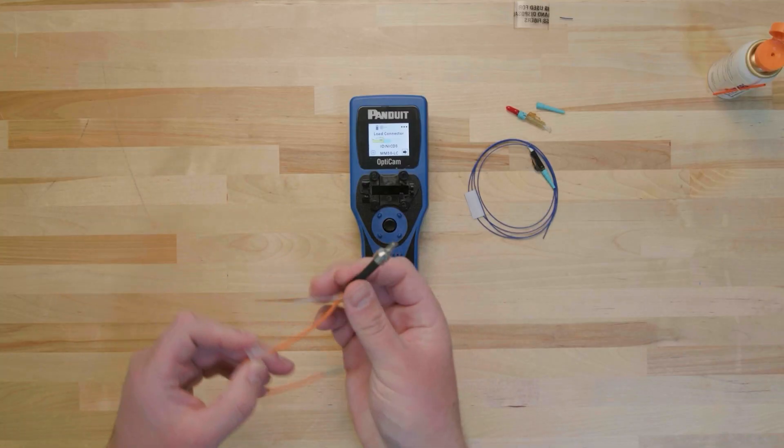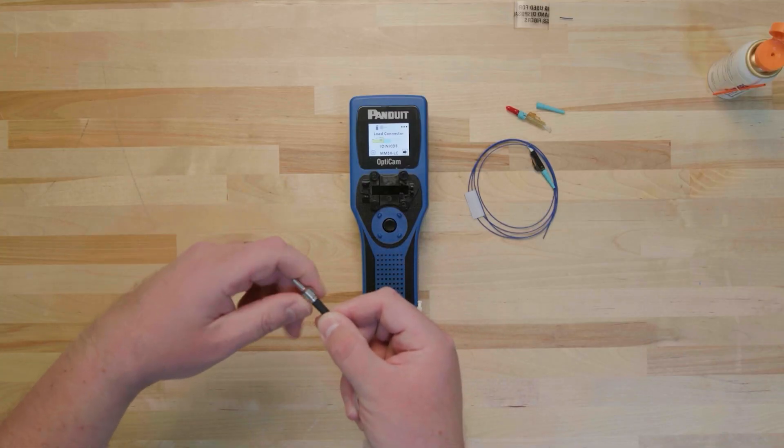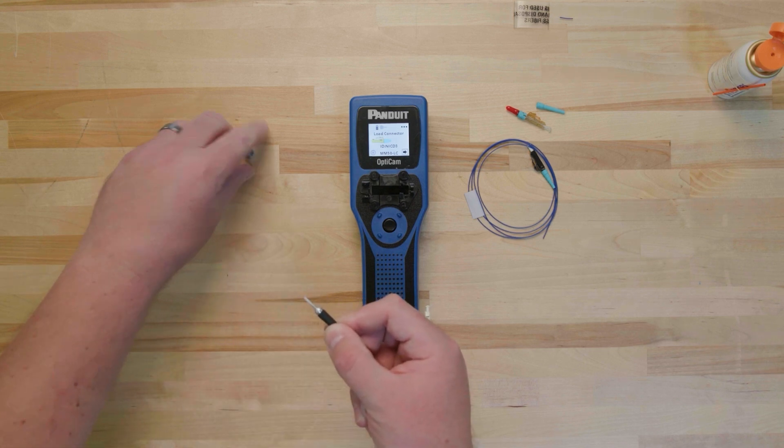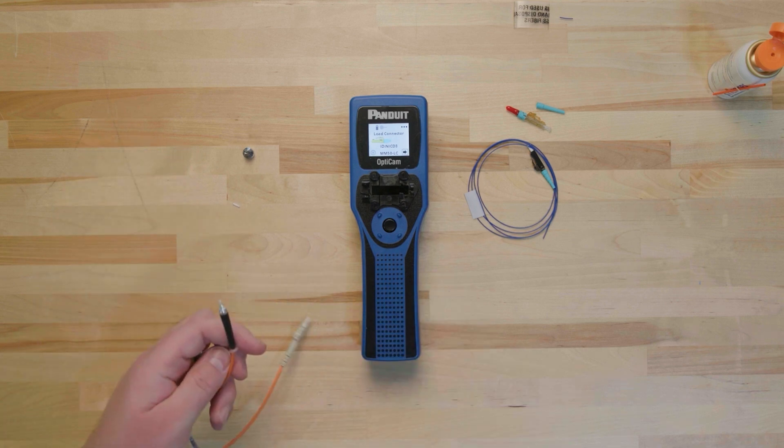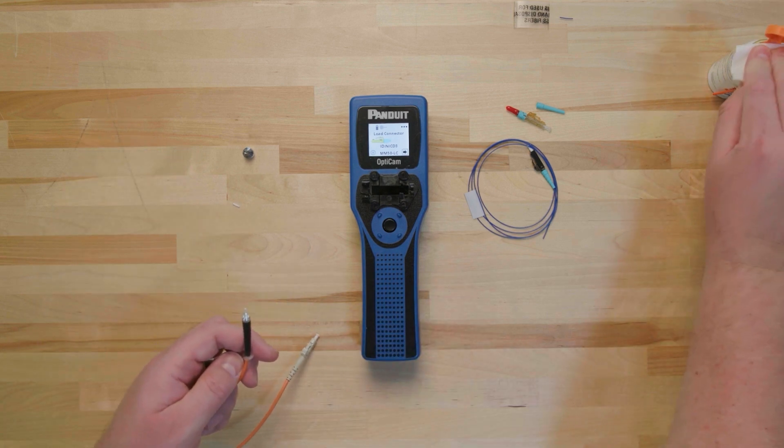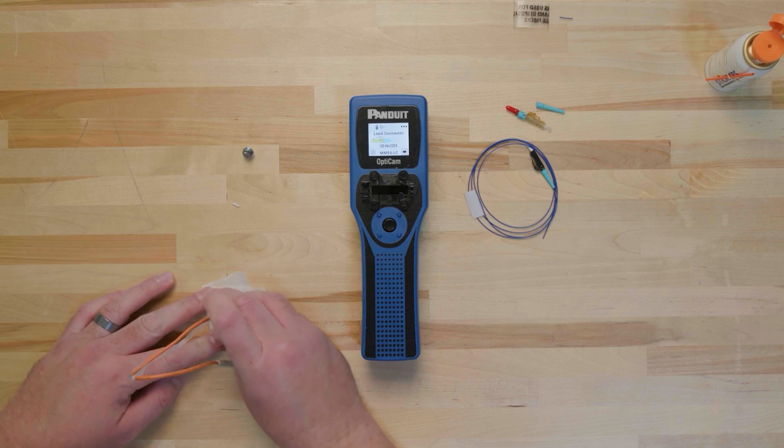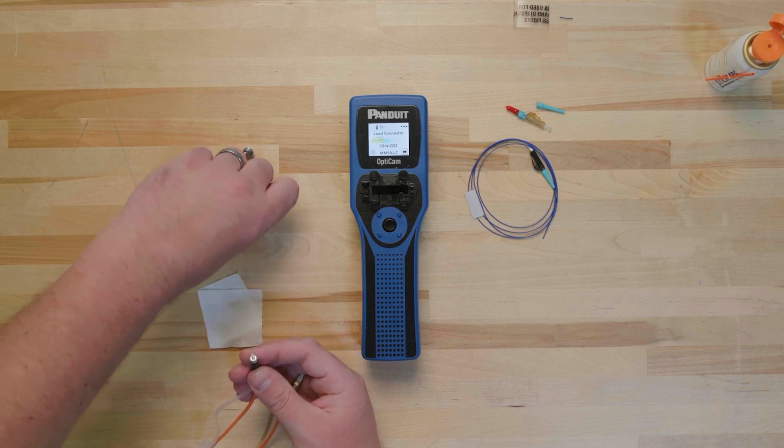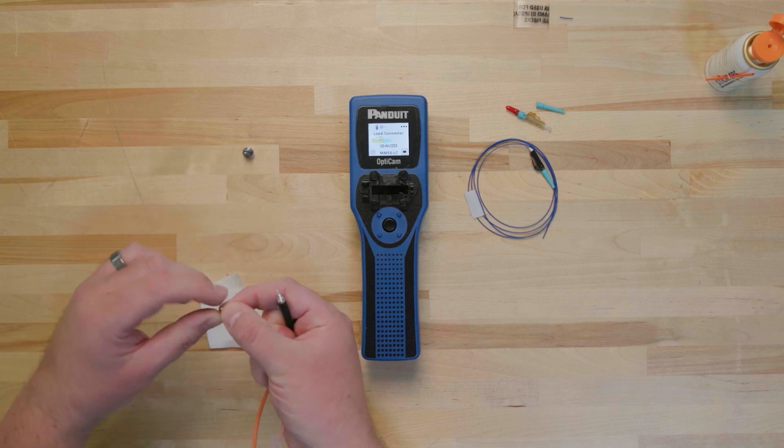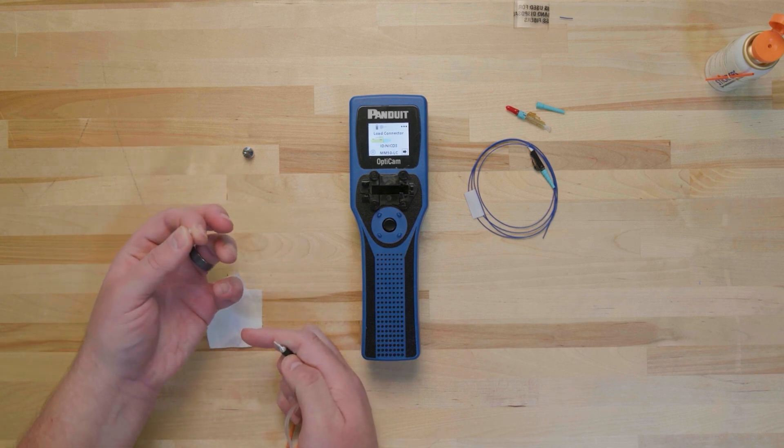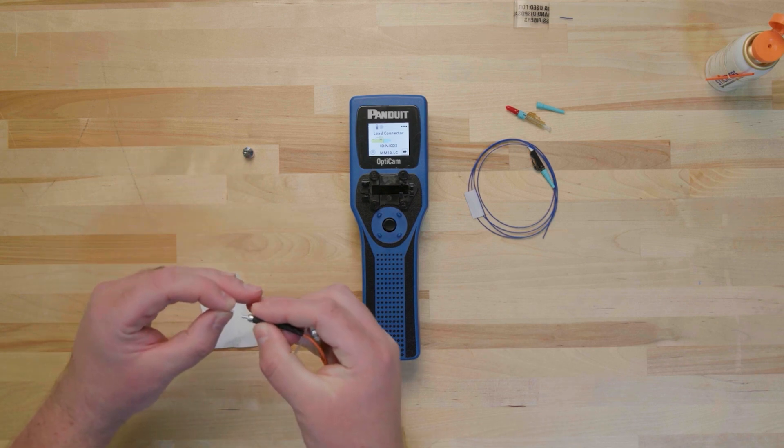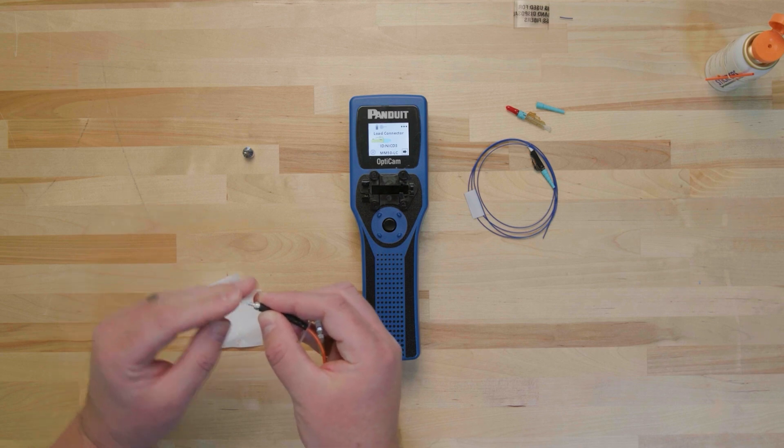It is vital to clean both ends of the launch cord every 50 to 60 terminations. To clean the launch cord, remove the adapter and alignment sleeve. Using an approved wipe and cleaning solution, clean the ferrule end face by running it from the wet portion to the dry portion of the wipe. Pre-saturated cleaning wipes are not recommended. Replace the alignment sleeve, checking to make sure it is not cracked or chipped. Replace the adapter and ensure it is hand tight.